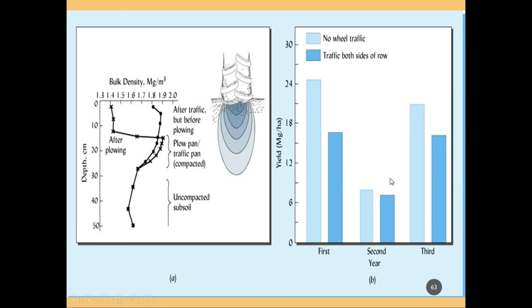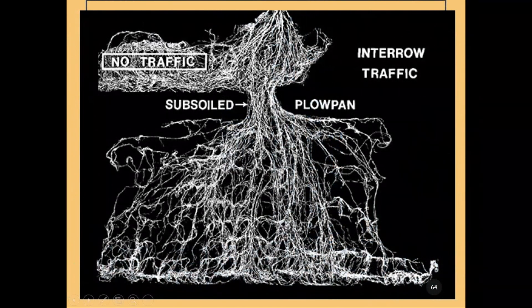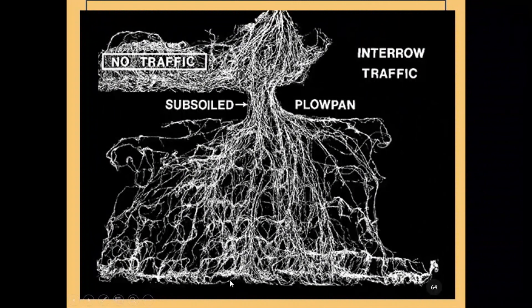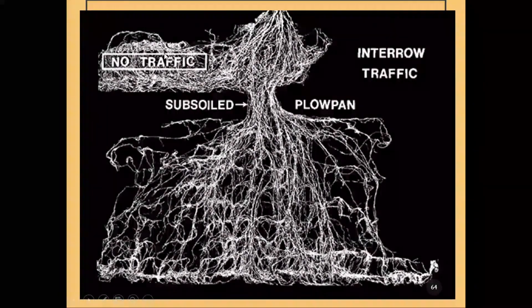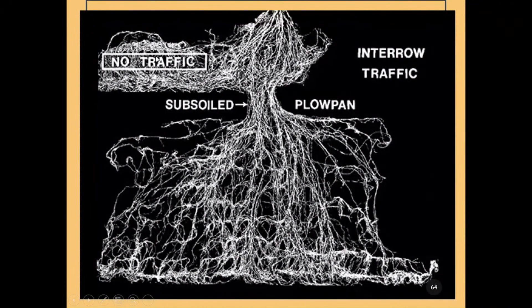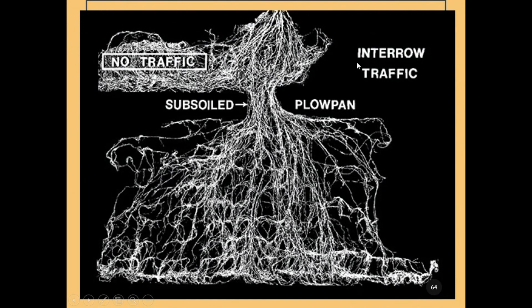Looking at yield from a field with no traffic versus traffic on the sides, yield is decreased in the areas of traffic. In a cross section of a field, no traffic on the left means lots of roots growing in the uncompacted soil, while on the right where the tractor drove, we see no root growth.